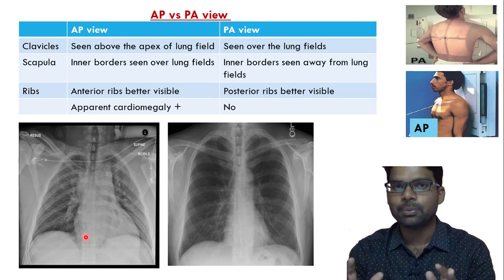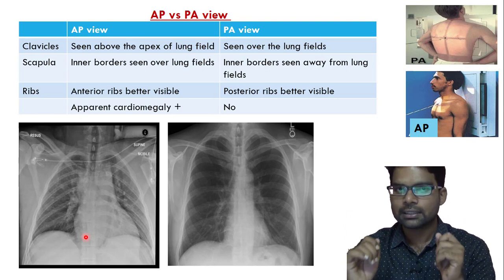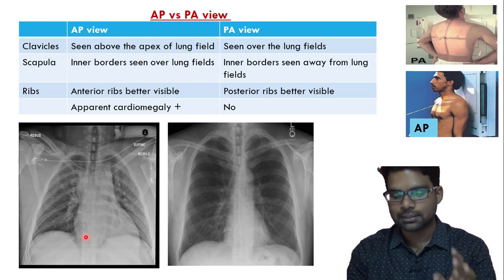These are the four basic differences between AP film and PA film. When given an X-ray, you must be able to identify whether it is PA or AP. Now let us look at normal radiological anatomy - the different structures visible in a chest X-ray. When someone gives you a chest X-ray, it is not only about the lungs or the heart; there are many structures visible, starting from skin going inside to the heart.